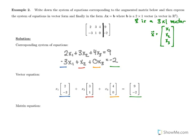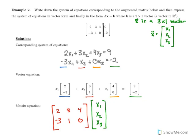The matrix equation is A times X equals B, where the columns of A are (2, −3), (3, 1), and (4, 0); X is the vector (X1, X2, X3); and B is (9, −2). That is our matrix equation AX equals B.